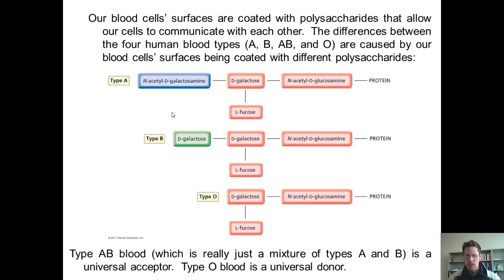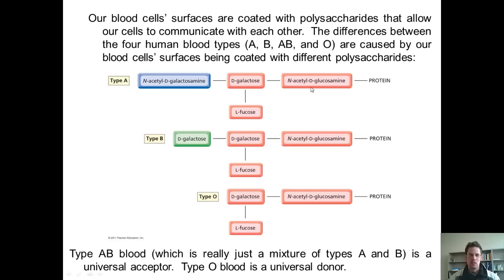The differences between the four human blood types — A, B, AB, and O — are caused by our blood cell surfaces being coated with different polysaccharides. A person who has blood type A has blood cells coated with this particular pattern: N-acetylglucosamine attached to the phospholipid membrane with D-glucose bounded to L-fucose, and then N-acetyl-D-galactosamine dangling off of it.